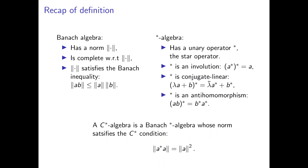First we have the concept of a Banach algebra, which is a complex algebra with some norm. The algebra should be complete with respect to the norm, and the norm should satisfy the Banach inequality: the norm of a times b is less than or equal to the norm of a times the norm of b. This property is sometimes called the submultiplicative property, but I'll just call it the Banach property going forward.